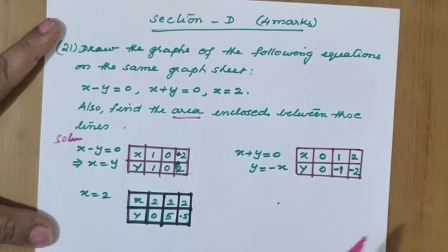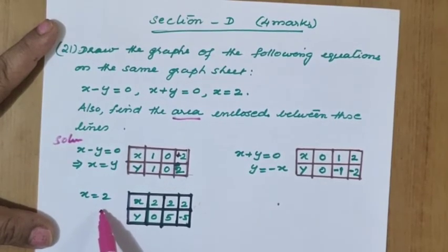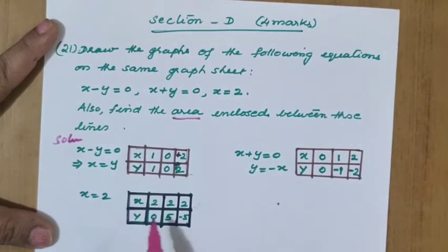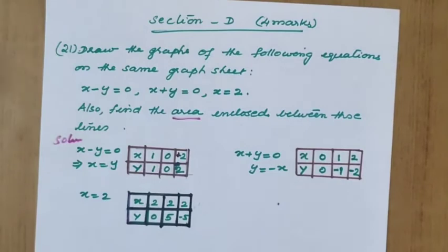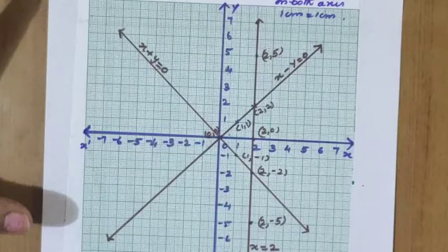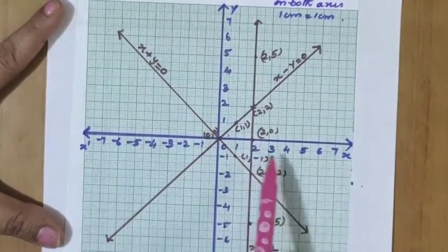When x equals 2, y equals minus 2. The third equation, x equal to 2, is a linear equation in one variable. For such equations, we write the x value three times — here we write 2, 2, 2 — and correspondingly y values as 1, 0, and then one positive and one negative value.